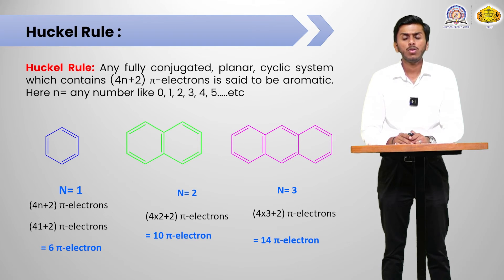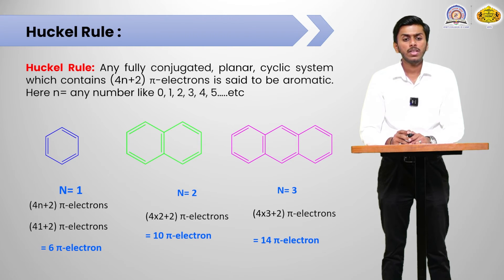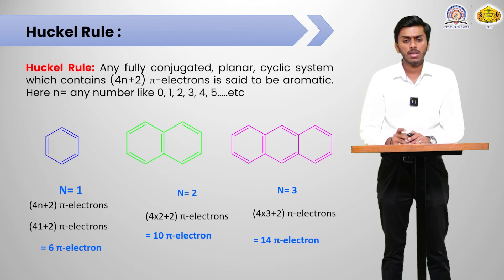For a compound to be aromatic, it should be conjugated, cyclic, planar in nature, and should have 4n+2 pi electrons. Examples of aromatic compounds: benzene is planar, cyclic, fully conjugated, and has 6 pi electrons. The second example is naphthalene, having 10 pi electrons — it is also planar, cyclic, and conjugated. The third example is anthracene with 14 pi electrons, where n equals 1, 2, and 3 in each case respectively.